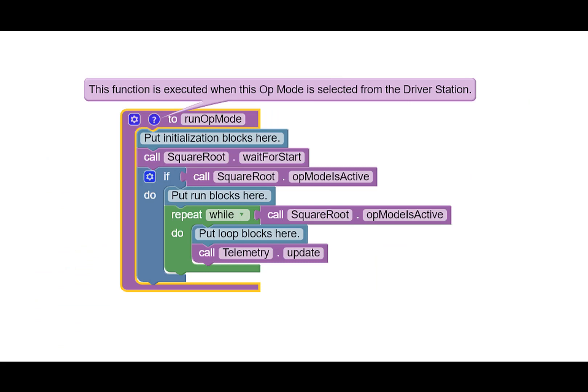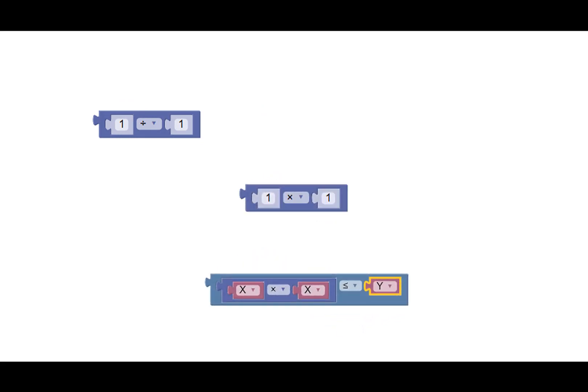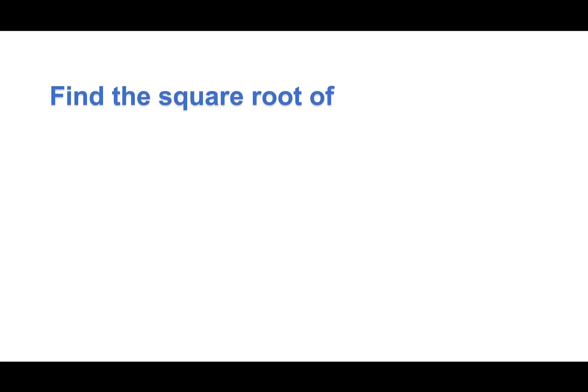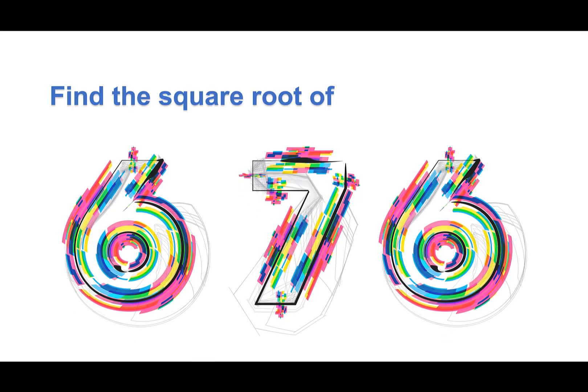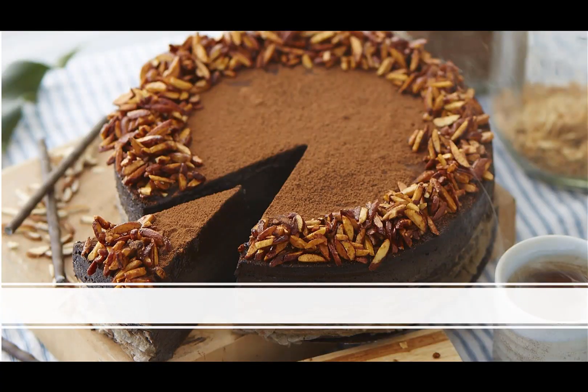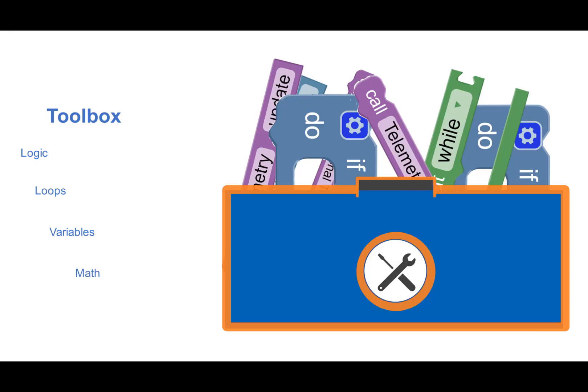Here's the basic framework of an op mode in blocks. The op mode is the program to run for output. So we are going to input the math within the framework to get the output or answer to the question, what is the square root of 676? Just like our ingredients, input make a cake, output.